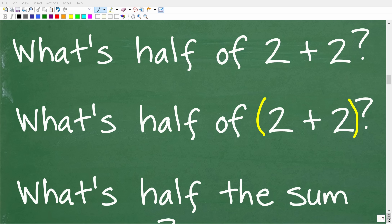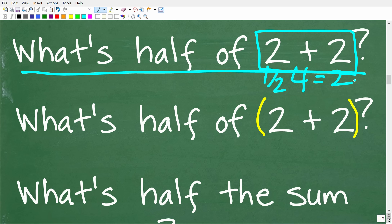Okay, so here is our problem again. So we have what's half of 2 plus 2? Now, a lot of people are thinking about this problem this way. What's one half of 2 plus 2? So they're focused in on the 2 plus 2 part first, right? So 2 plus 2 is 4. And then one half of 4 would be 2, right? So that is logical.